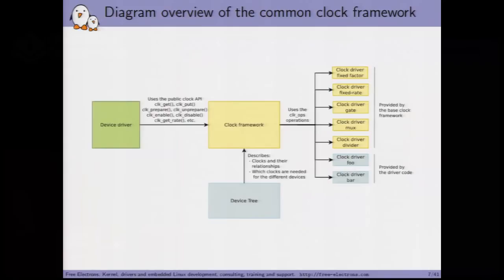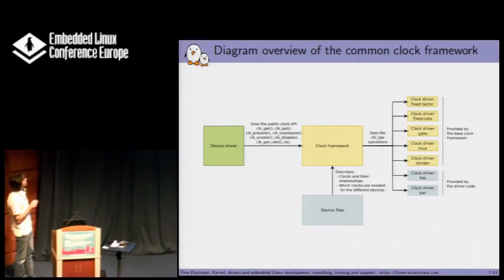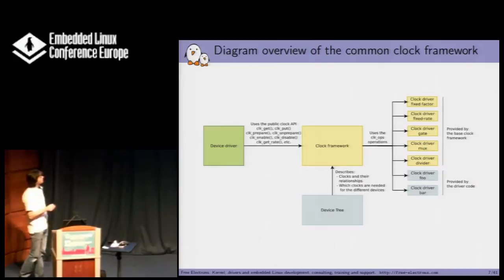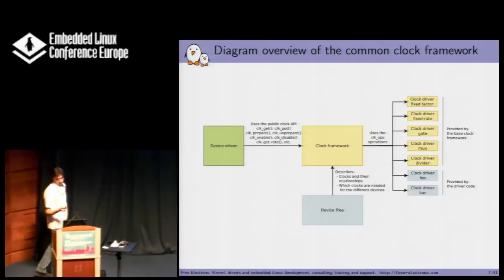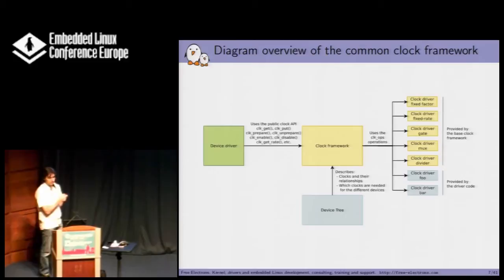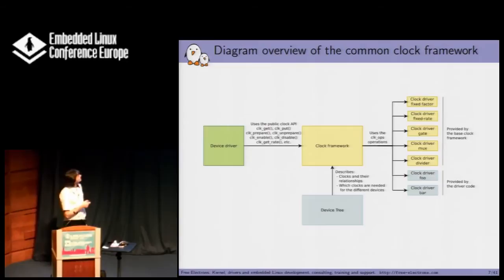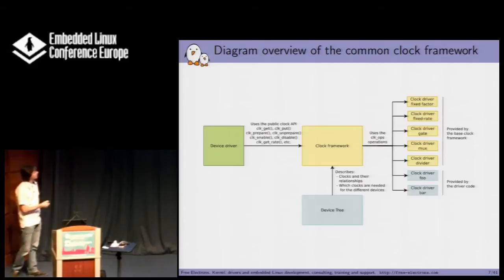Here is an overview of the big picture of the clock framework. The clock framework itself is used by device drivers, calling the API that has been there for years. It gets from the device tree the clocks and their relationships, as well as the relationship between the clock and the device driver. Then you have the clock driver itself — some clocks are provided by the framework, and you can add your own on top of it.